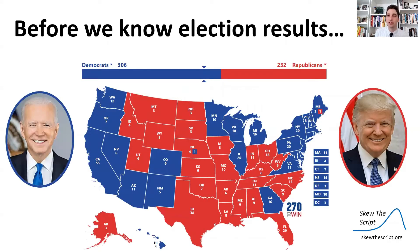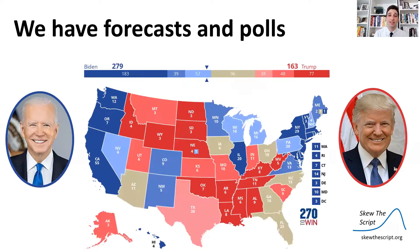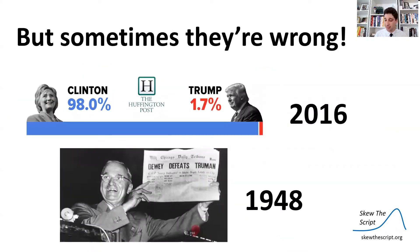Here's a map of the results from the 2020 election, but before we counted the results on election day, we had maps that looked like this — forecasts of what might happen in each state based on polls. Sometimes these forecasts can be very wrong. For example, in 2016, most news organizations projected Hillary Clinton would win the election with a high probability, yet Donald Trump won.